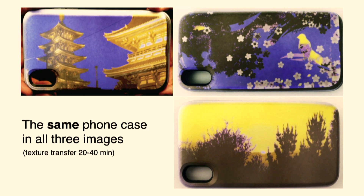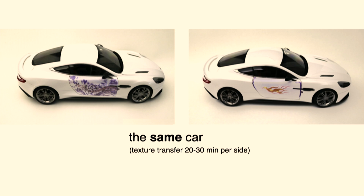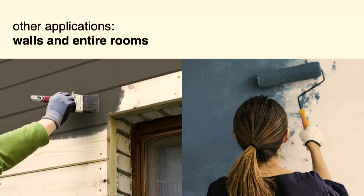Here you see a summary: three different textures applied to the same phone case — so this is one physical object. The same applies for the shoe, for the car, and you can imagine other applications. For instance, we are currently working on clothing, so you're not going to need 10 shirts with 10 different colors. You can even imagine this for walls and entire rooms — if you're owning an event space, we can simply reprogram the walls to fit your event.